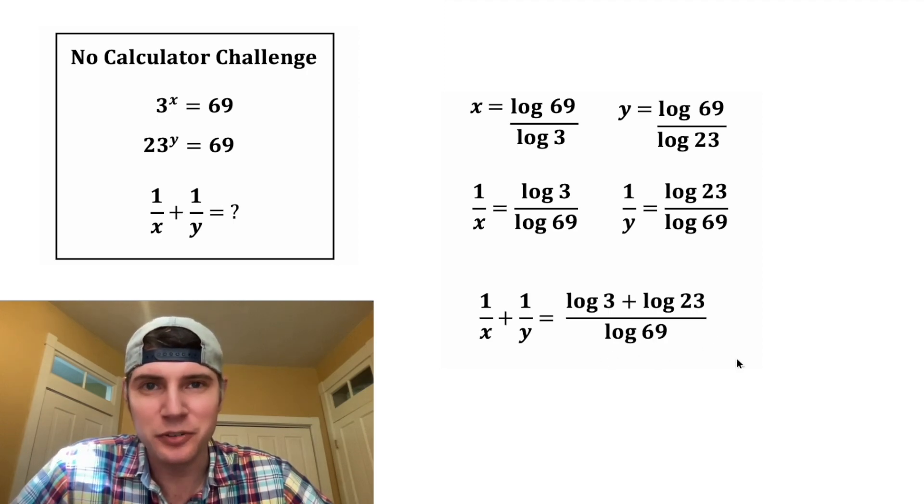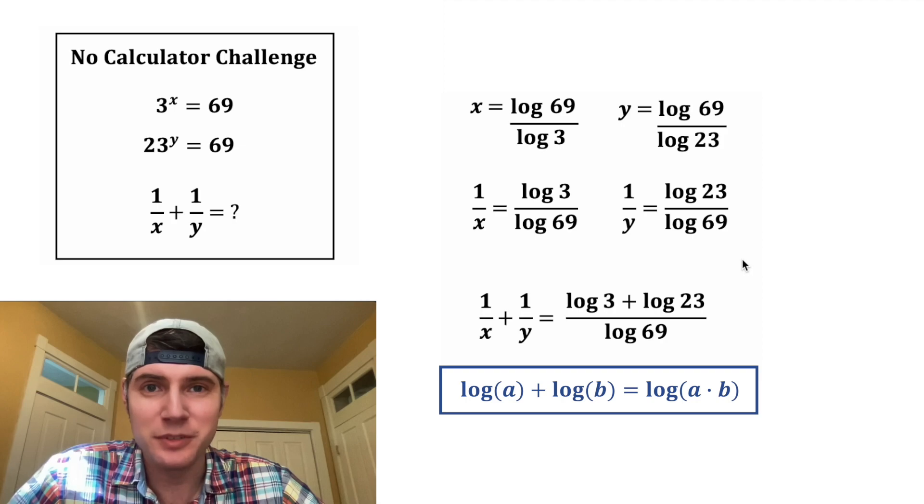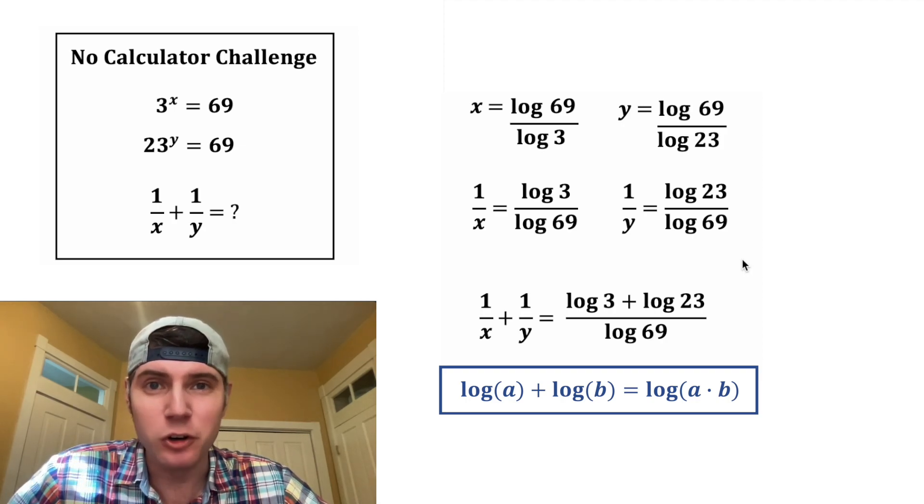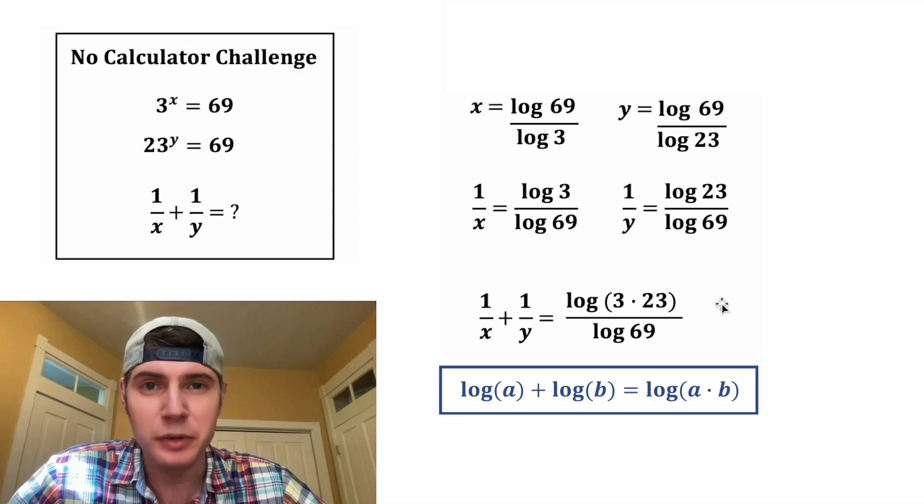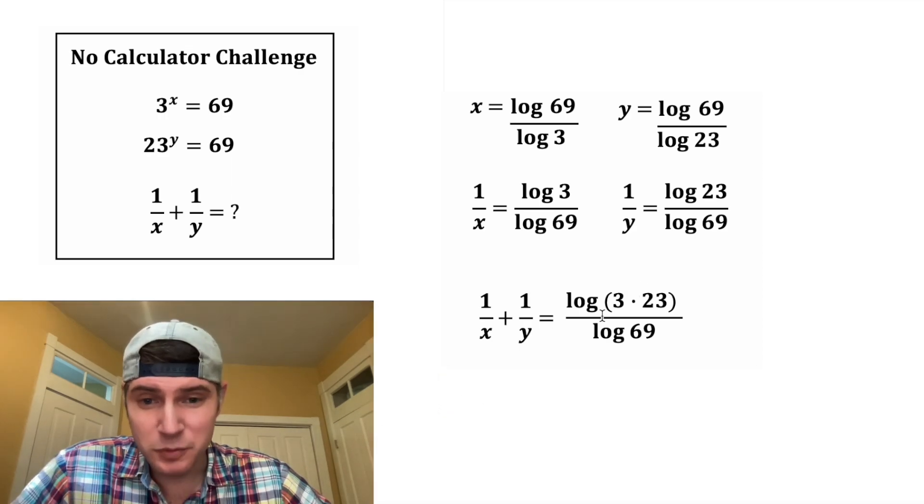And now we get to use another rule of logarithms. The log of a plus the log of b is equal to the logarithm of the quantity a times b. So in this case, log of 3 plus log of 23 is going to be equal to log of 3 times 23. And inside these parentheses, 3 times 23 is 69.